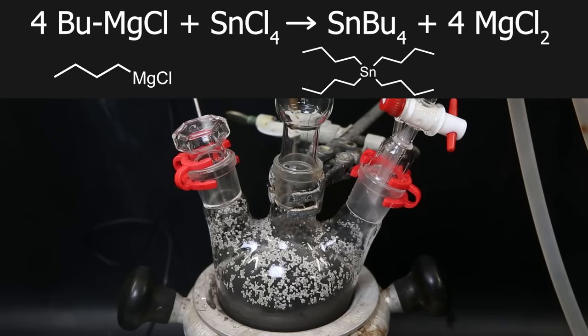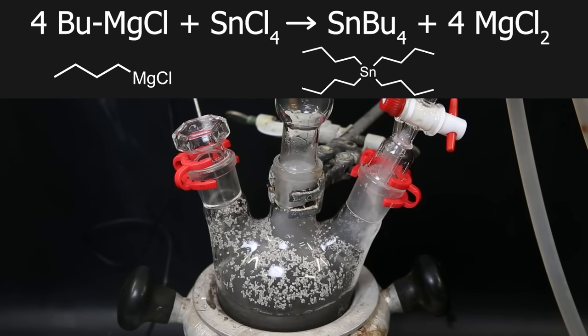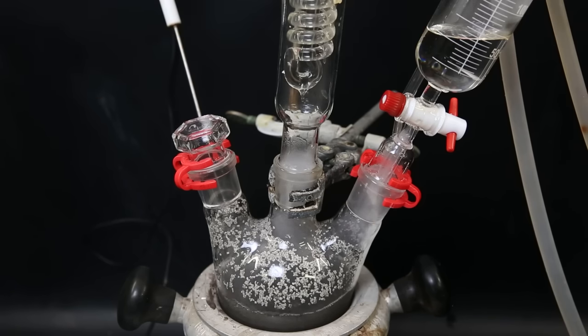In this reaction, the Grignard reagent reacts with the tin 4-chloride in a simpler way than regular Grignard reactions. Here the butyl groups can attach themselves to the tin and kick off the magnesium chloride and form tetrabutyl tin instantly, without the need for hydrolysis of the product.